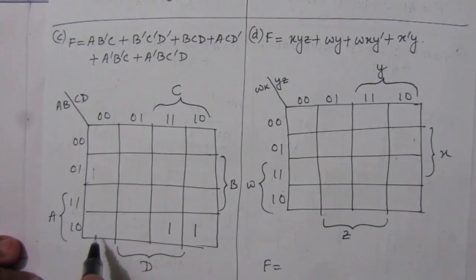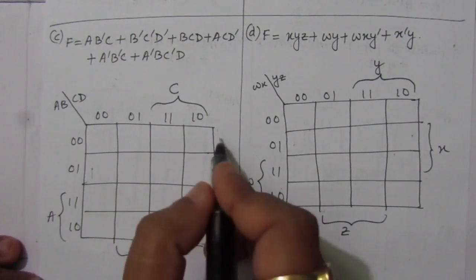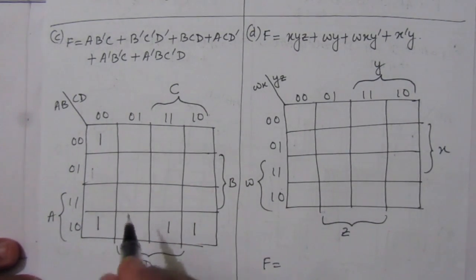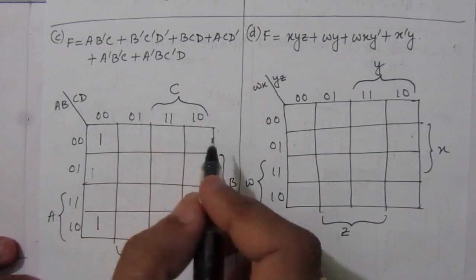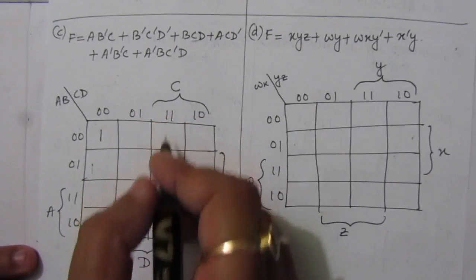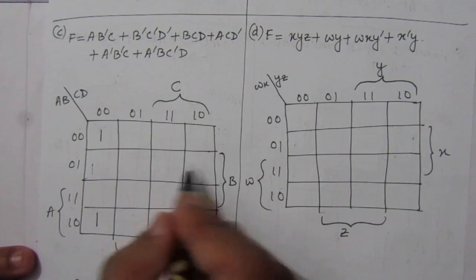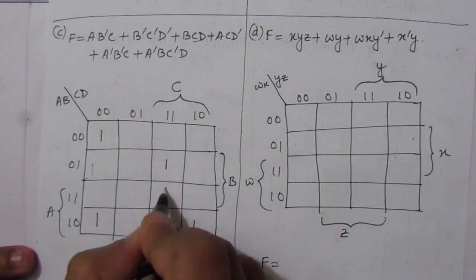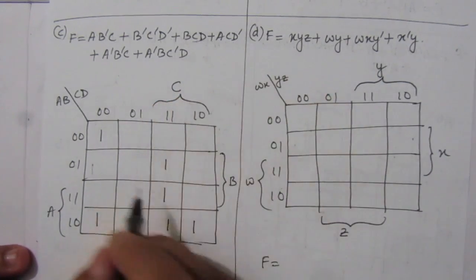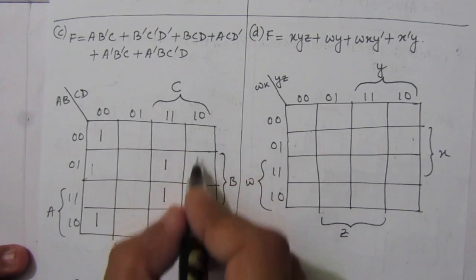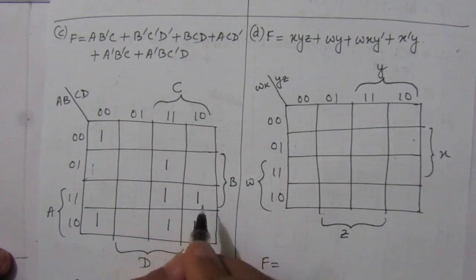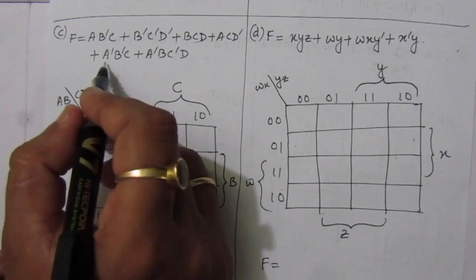Then we have BCD: CD means the third column, and B value is one for those two rows, so we have BCD here. Then we have ACD-bar: CD-bar is the fourth column, and A value is one for those two rows — one is already there, so we write another one. Then A-bar B-bar C: A-bar B-bar is that row and C value is one for those two, so we have one-one there.